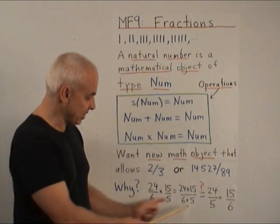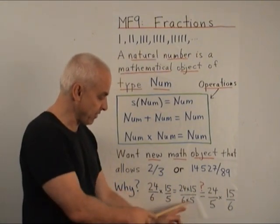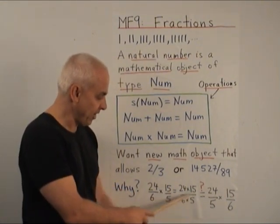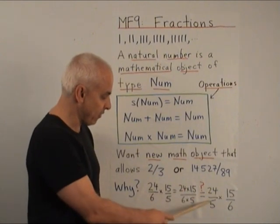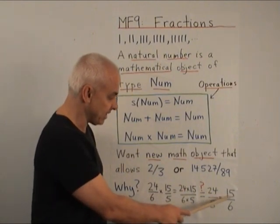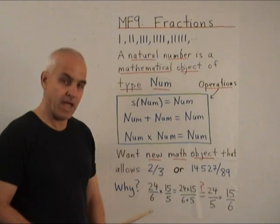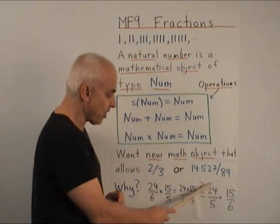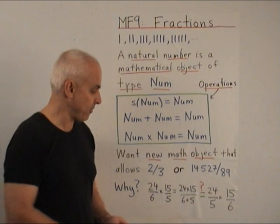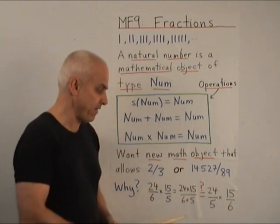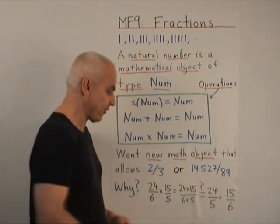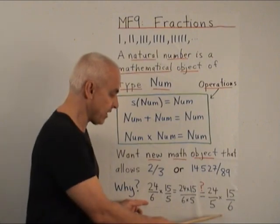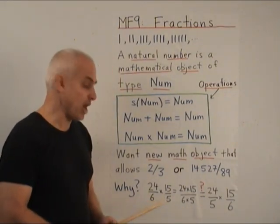And the way we are doing arithmetic suggests that we should be able to swap these around and replace it with 5 times 6 and then rewrite this as 24 divided by 5 times 15 divided by 6. However, currently these are not well defined operations. We cannot currently divide 24 by 5 nor 15 by 6. So currently this kind of operation is not defined.